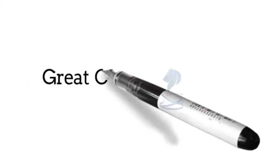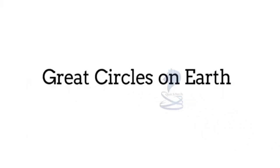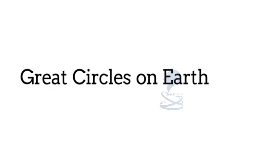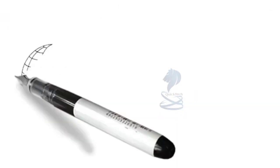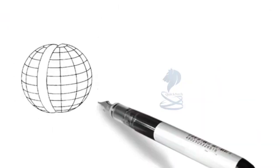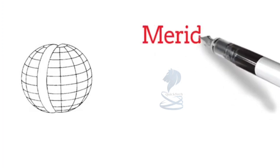Now let's discuss the great circles on the earth's surface. In this diagram we see the various imaginary lines on the earth's surface and their names. Now let's see examples of great circles, one of which is the meridian.